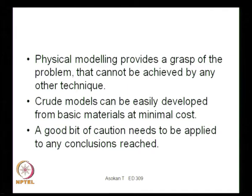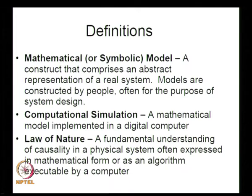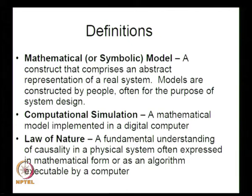That is the first method — heuristic modeling. Now, we can also do different types of mathematical modeling. A mathematical model can be defined as a construct that comprises an abstract representation of a real system. Models are constructed by people often for the purpose of system design. Mathematical models are abstractions of physical systems. Computational simulation is a mathematical model implemented in a digital computer — once you have a mathematical model, you can implement it in a digital computer and get simulations done.